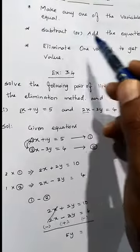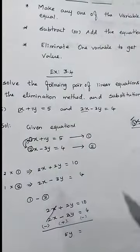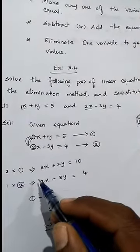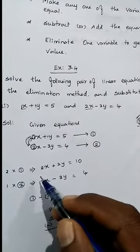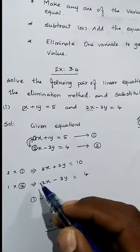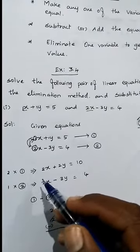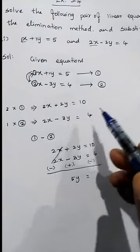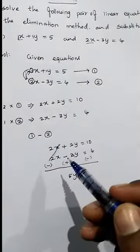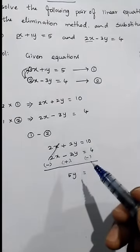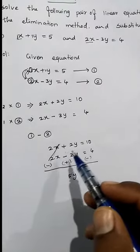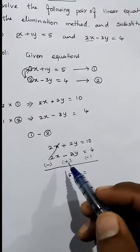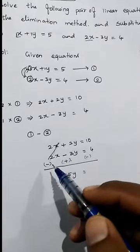Now for the second step — subtract or add. When both coefficients of the x terms are positive, you subtract the equations. If one is positive and one is negative, you add the equations. Here both 2x terms are positive, so we subtract: equation 1 minus equation 2. In column subtraction, we change the sign of the bottom terms to the opposite. So plus 2x becomes minus, and 2x minus 2x cancels to zero.